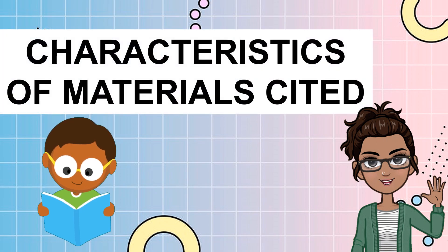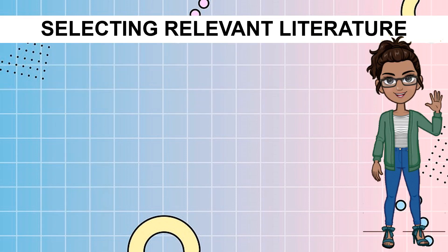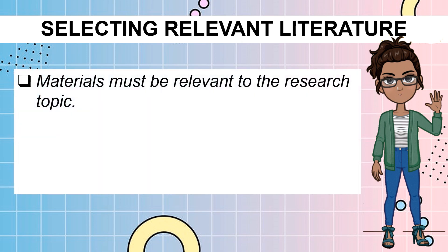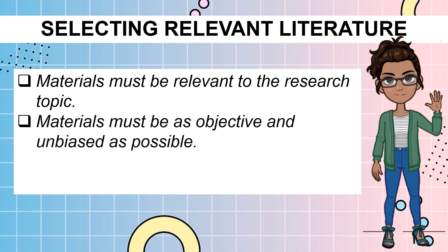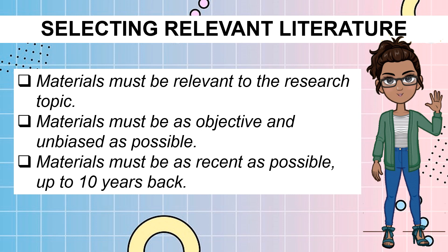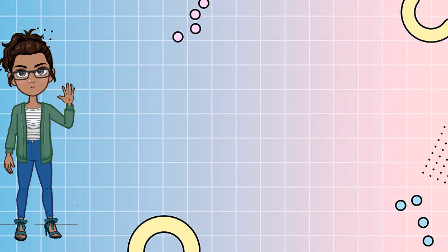Now, the characteristics of materials cited. Samu, as cited in Prieto in 2017, enumerated the different characteristics of the literature and studies to be acknowledged in the present studies. First, materials must be relevant to the research topic. Second, materials must be as objective and unbiased as possible. Third, materials must be as recent as possible — up to 10 years back. In taking down notes for your review of related literature, you should also include where you get those details so that you can acknowledge the creator.